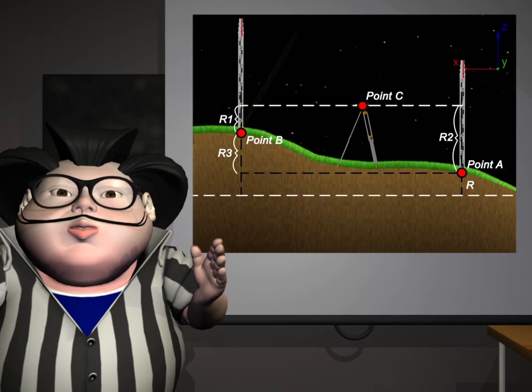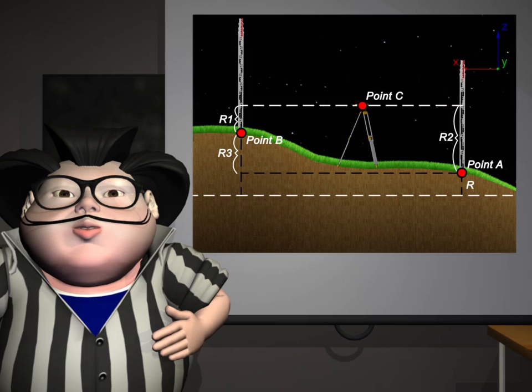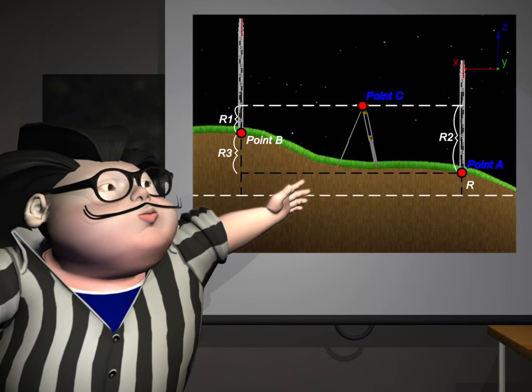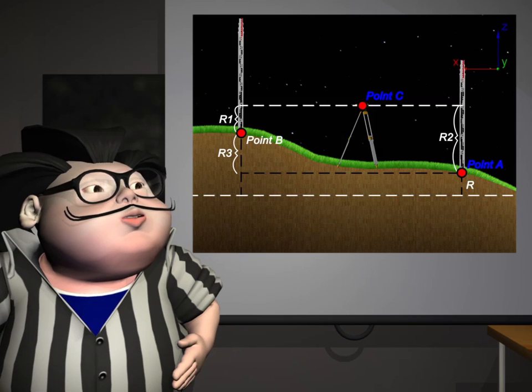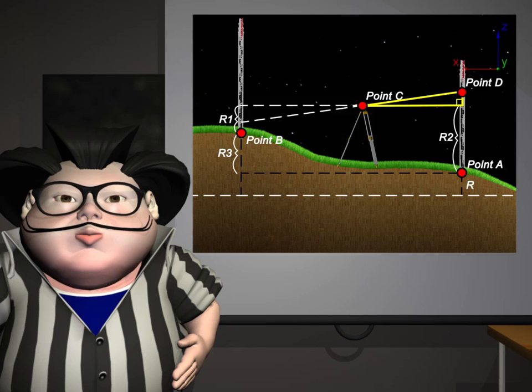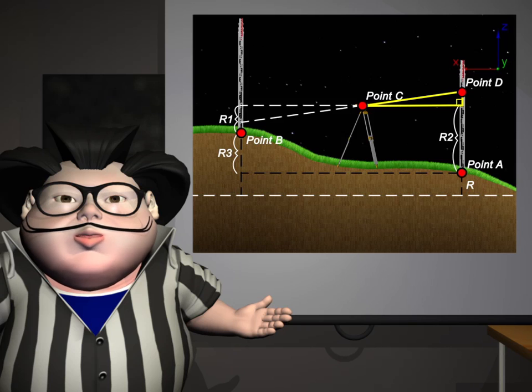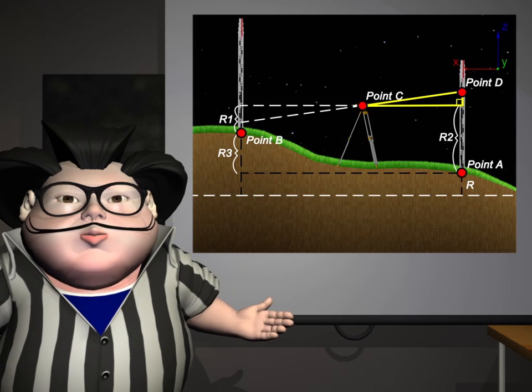The level instrument must be perpendicular to the level surface. To get the elevation difference of point A and point C, R2, the line of sight should be parallel to the level surface. If the level instrument is not perpendicular to the surface, the line of sight will not be parallel to the level surface. R2 is not equal to the difference of point A and point D.